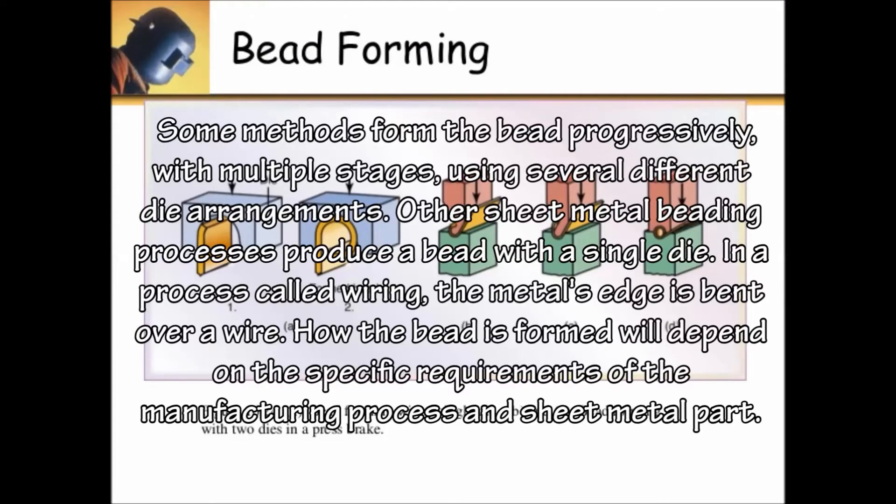Some methods form the bead progressively with multiple stages using several different die arrangements. Other sheet metal beading processes produce a bead with a single die. In a process called wiring, the metal's edge is bent over a wire. How the bead is formed will depend on the specific requirements of the manufacturing process and sheet metal part.